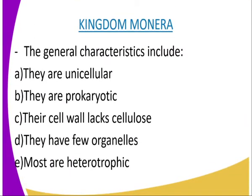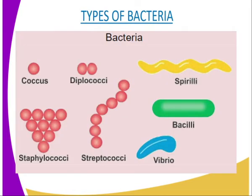The first kingdom that we are going to look at will be the kingdom Monera. This kingdom comprises mainly the bacteria, and we can have different bacteria. As you can see from our diagram, we have the cocci, we can have the diplococci, we have the staphylococci, we have streptococci, we can have the vibrio, the bacilli, the spirilli. So all these bacteria belong to kingdom Monera.